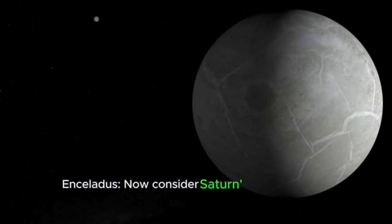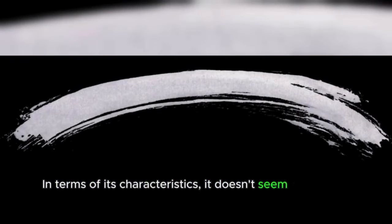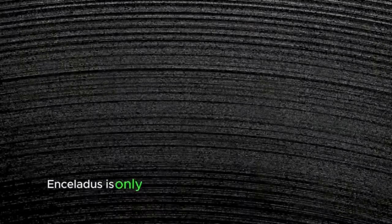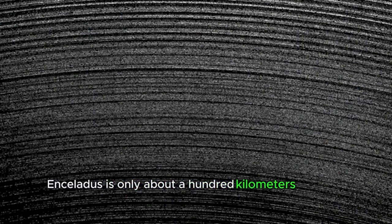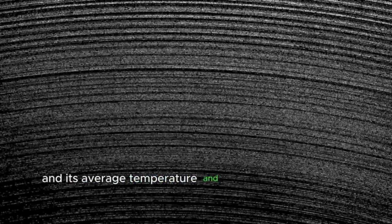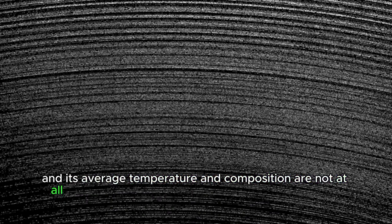Now consider Saturn's other satellite, Enceladus. In terms of its characteristics, it doesn't seem to be very different from Mimas. It was also discovered by astronomer William Herschel. Enceladus is only about a hundred kilometers larger in diameter than Mimas. And its average temperature and composition are not at all different, except that its density is higher than the latter.